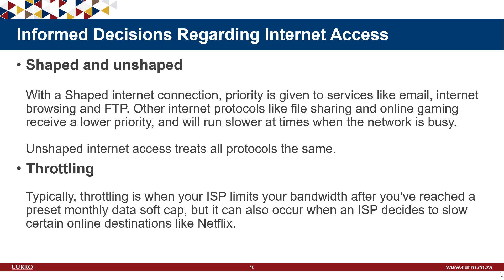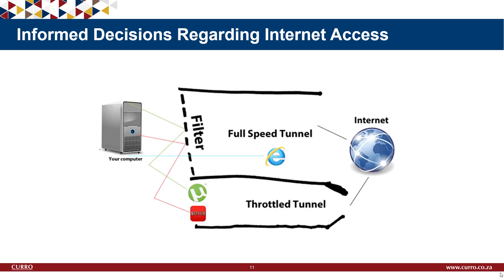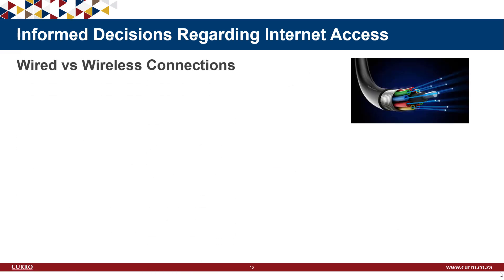Shaping and throttling work together: the ISP groups protocols into priority and non-priority categories (shaping), then applies a throttle limit to the lower-priority ones. In the diagram example, information goes from your computer to a filter managed by your ISP. Internet browsing gets a wide, fast unshaped lane, while torrents and Netflix are split off and squeezed through a small throttled tunnel — slowing that traffic down.